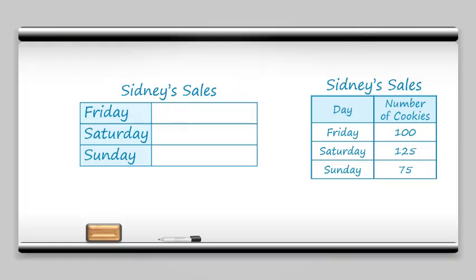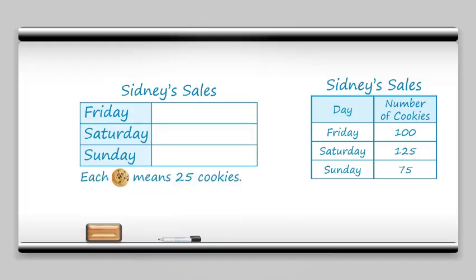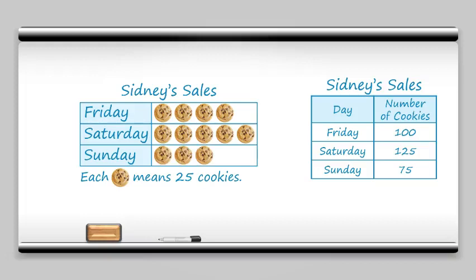What we need to do is make each cookie worth more than one cookie. That would help us. With values of 100, 125, and 75, if each cookie were to be worth 25 cookies, that would make things nice and pretty. To count 100 by 25s: 25, 50, 75, 100. On Saturday it's 125, so that's just one extra cookie. And on Sunday it's 75: 25, 50, 75. And just like that, you've made a picture graph!